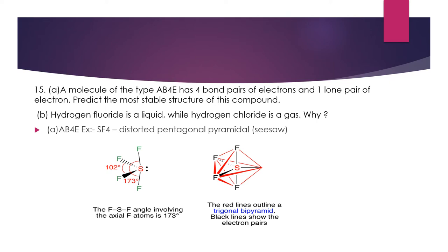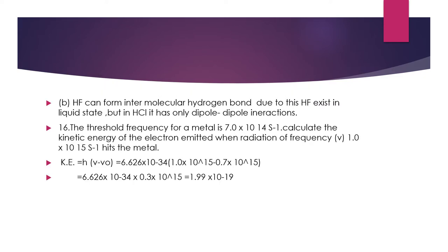Question 15(b): Hydrogen fluoride is a liquid while hydrogen chloride is a gas — why? The physical state depends on molecular mass and intermolecular forces. HCl has a higher molecular mass than HF, yet HF is a liquid. This is because HF, due to the high polarity of its bond, forms hydrogen bonds, making molecules closer together. HCl can only form dipole–dipole interactions. Because of hydrogen bonding, HF exists in the liquid state while HCl exists in the gaseous state.